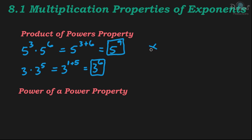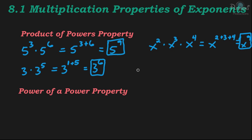Another example using variables: x squared times x cubed times x to the 4th. That equals x to the 2 plus 3 plus 4. Since 2 plus 3 is 5, plus 4 is 9, the answer is x to the 9th power. You can expand these — writing x squared as x times x, x cubed as x times x times x, and so on — but these properties save time and paper.